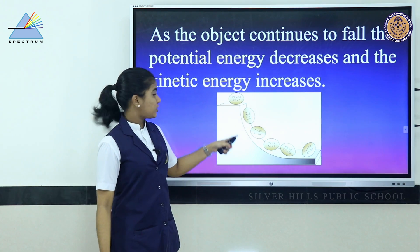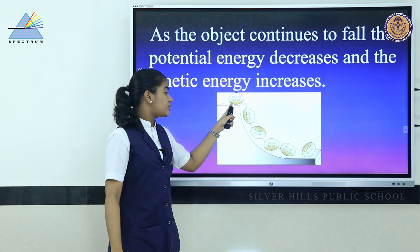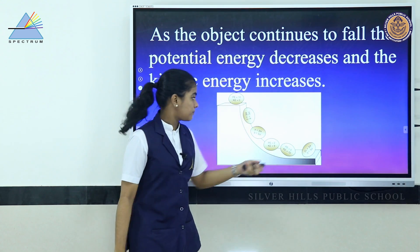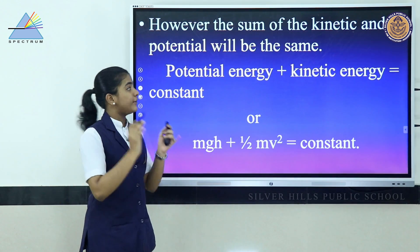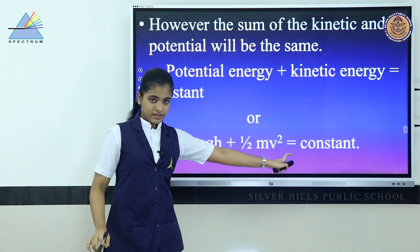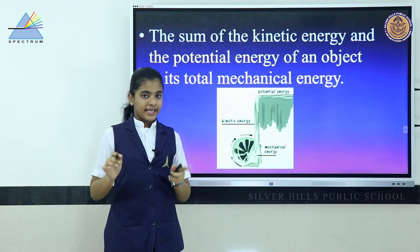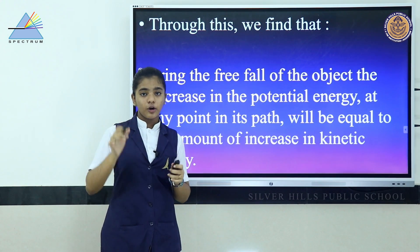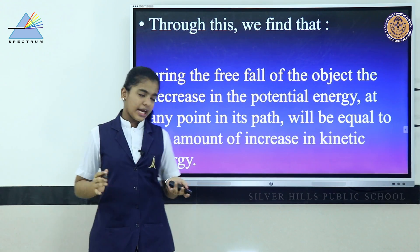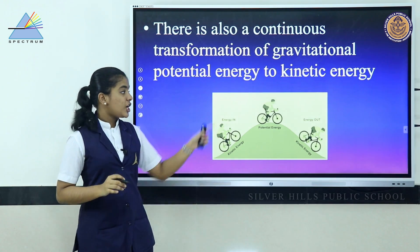As shown in the diagram, when the object is stationary at the top, potential energy is maximum (e.g., 10 units) and kinetic energy is zero. As it rolls down, potential energy decreases and kinetic energy increases, becoming maximum at the bottom. However, the sum of kinetic and potential energy — the total mechanical energy — remains constant: mgh + ½mv² = constant. The decrease in potential energy at any point equals the increase in kinetic energy.